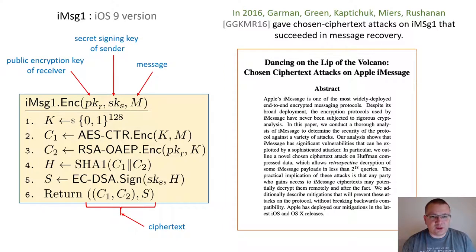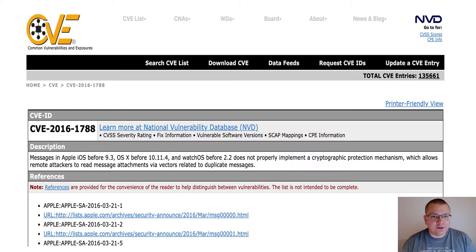In 2016, Garman, Green, Kaptychuk, Myers, and Rushanan found a practical chosen ciphertext attack against this scheme, which resulted in being able to recover encrypted messages. This attack was acknowledged by Apple, and it was fixed starting from version 9.3 of Apple iOS.